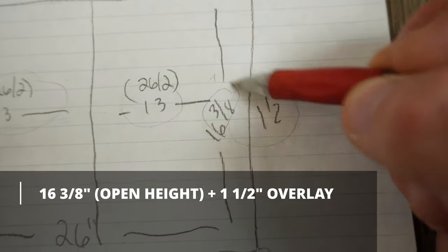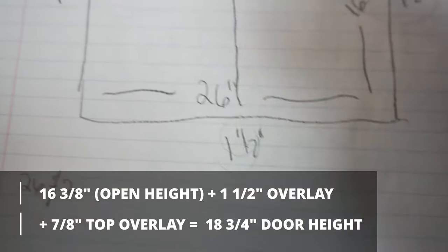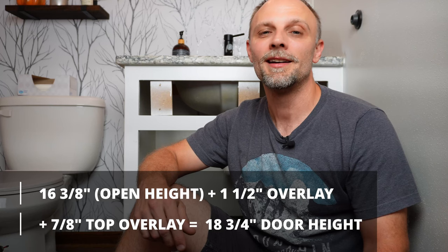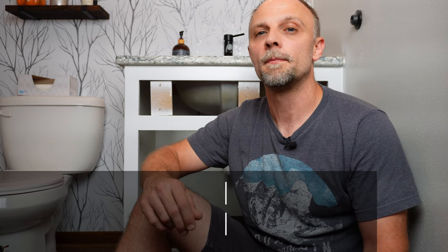Next let's determine the height of the doors. So same concept here. We're going to take the height of our opening plus the bottom overlay, plus the top overlay. In this case, we'll take 16 and 3/8 of an inch plus the one and a half inch overlay on the bottom and the 7/8 of an inch overlay on the top, which equals 18 and 3/4 of an inch for the door height. So now we've determined that the cabinet doors need to be 14 and a half inches wide by 18 and 3/4 inches high.